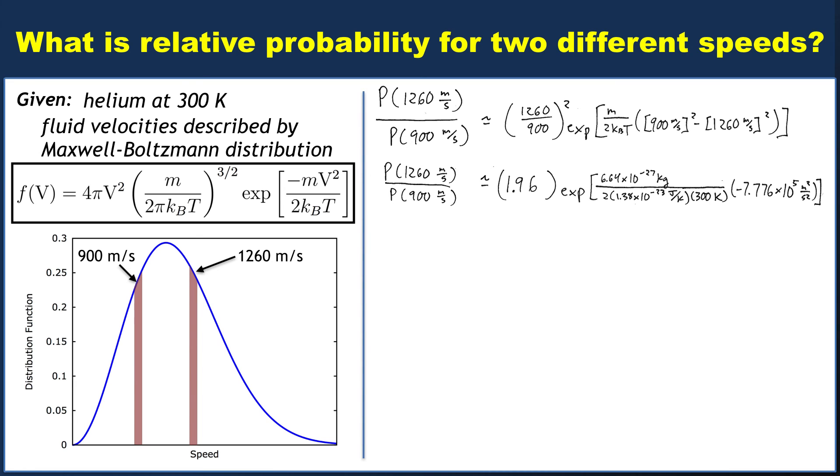So we'll insert the value for the Boltzmann constant, simplify things a little bit, and we end up with a ratio of probabilities of 1.05, meaning that it is 5% more likely to find a particle moving at 1260 meters per second than moving at 900 meters per second.